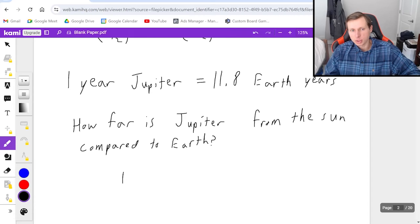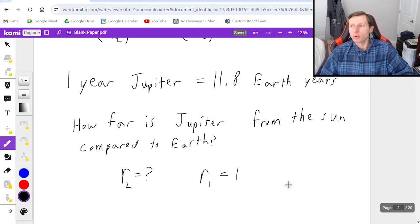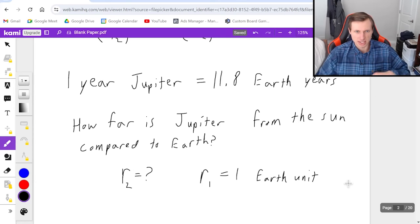And so here's what we're going to do. First of all, I need to recognize I'm solving for the radius this time, and I can call this radius 2. And I'm going to call the radius for Earth r1, and I'm just going to set that equal to 1. Why 1? Because I don't know the actual distance, so I'm just going to call it 1 Earth unit. And not only am I allowed to do it, this is what's encouraged for anyone taking a physics class.